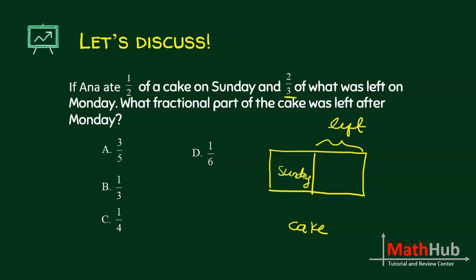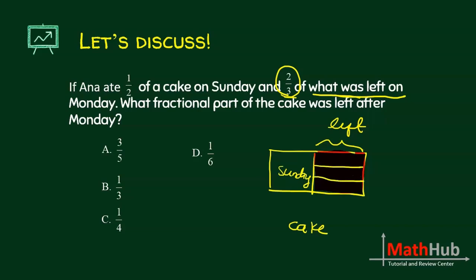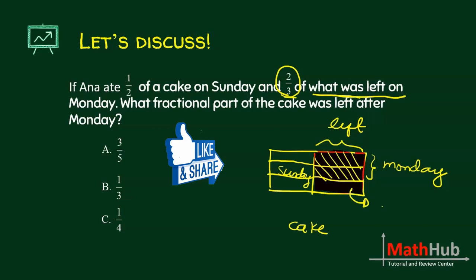She ate two thirds of what was left. So we get two thirds of that remaining half. We divide it into three parts and take two of them — she ate those on Monday. If you continue the dividing lines across the whole box, you can see you now have six equal parts, and one part remains. That is 1/6. The answer is letter D.